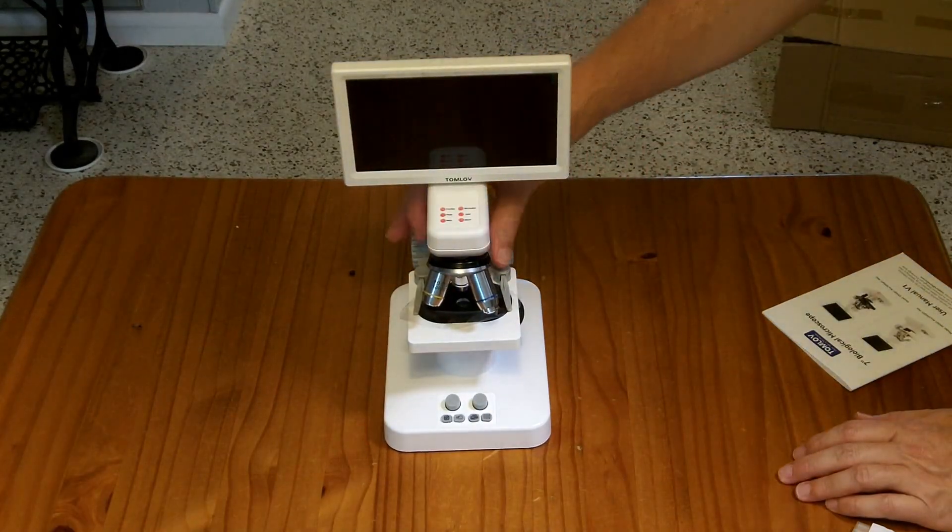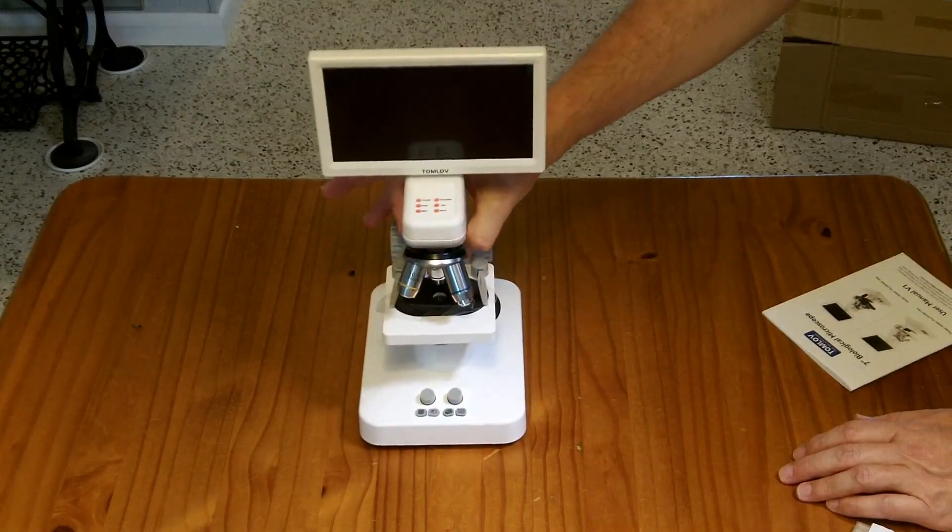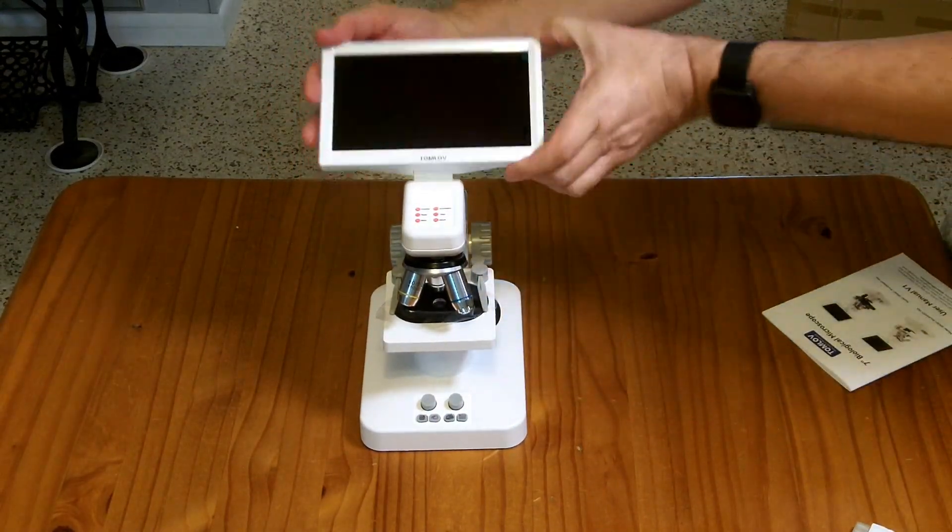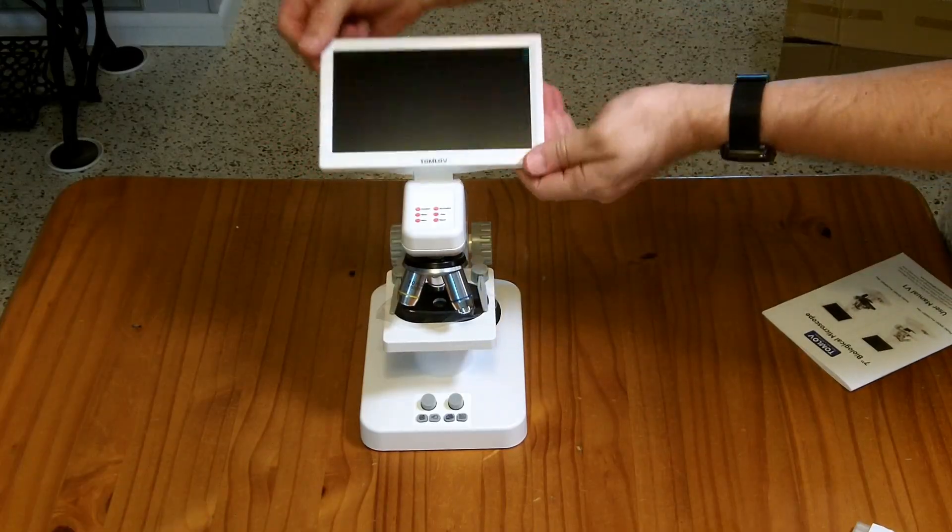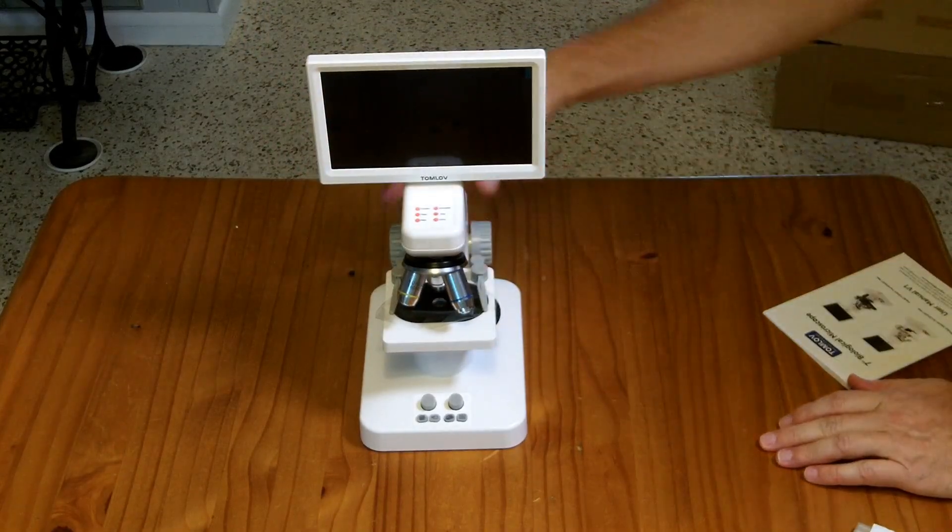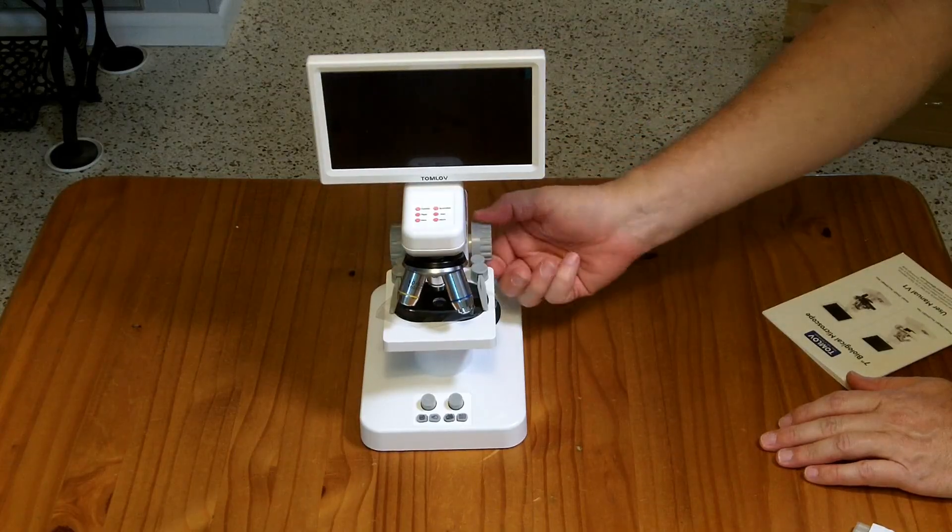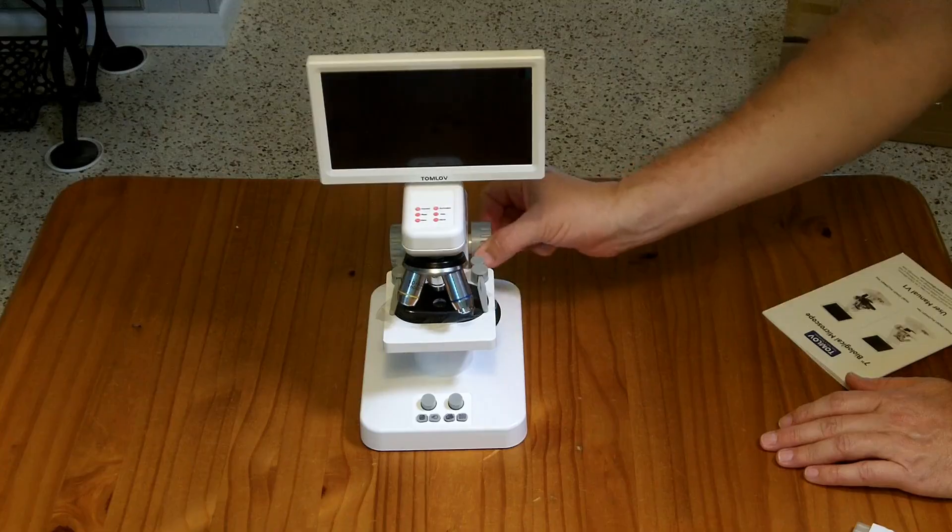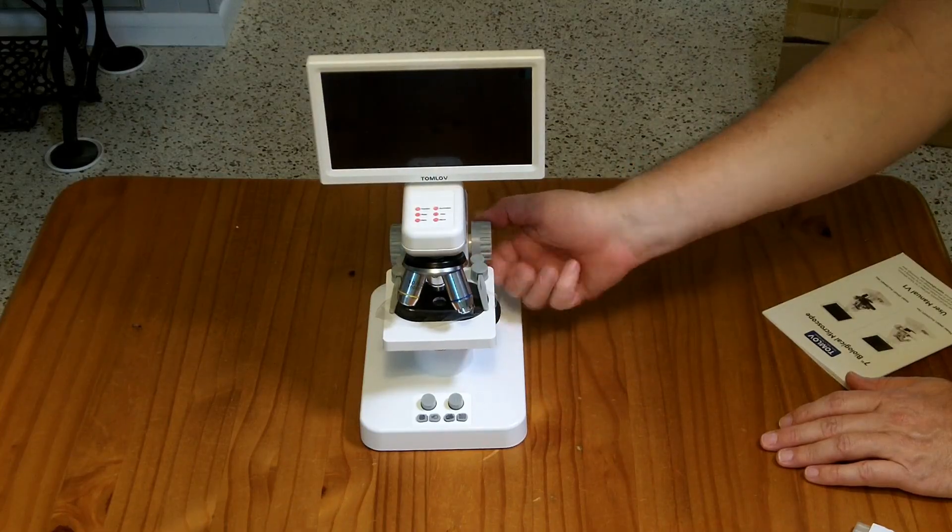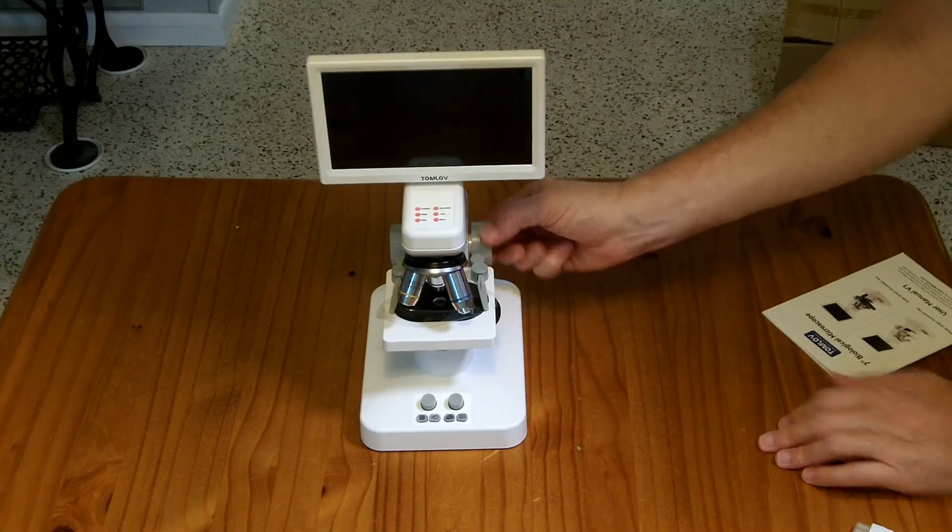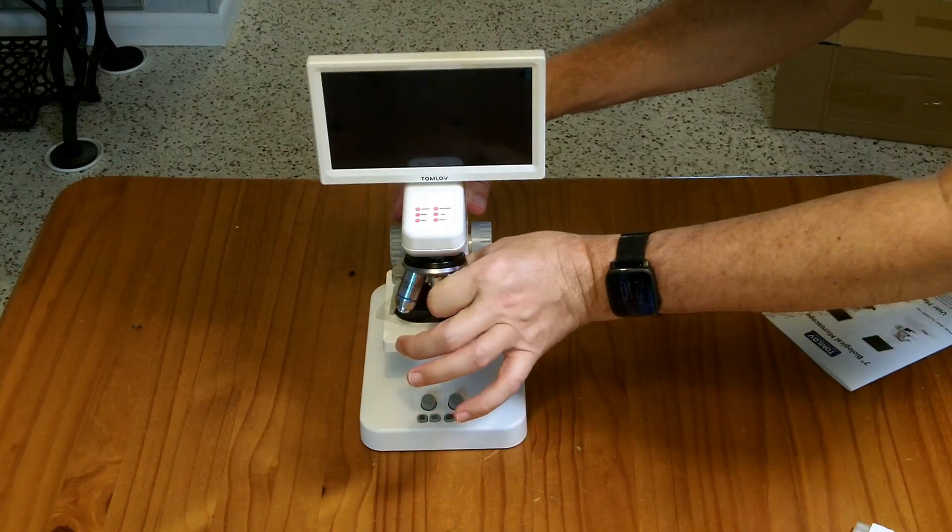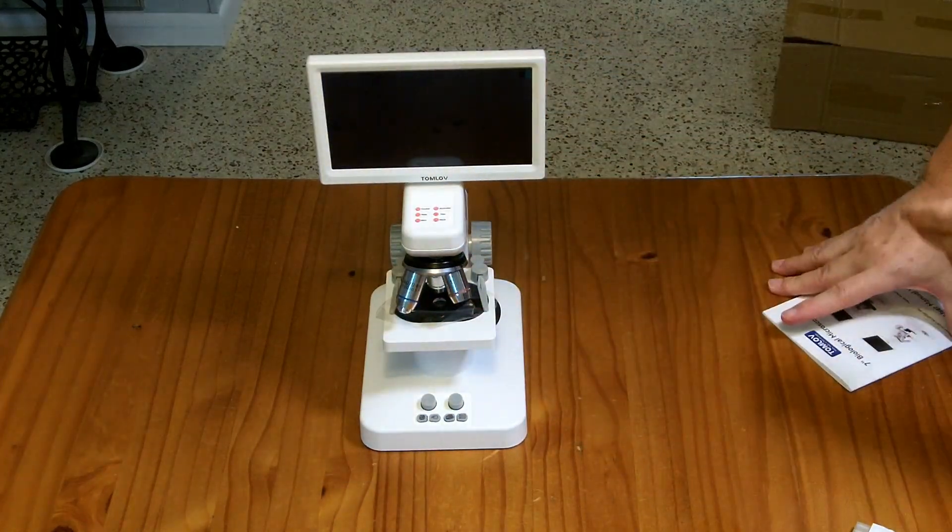As microscopes go, this guy is compact. It doesn't take up a lot of desk space. The screen is relatively large, but it folds back very good for storage. It looks pretty nice. It's a plastic body, it's a lot of plastic in the construction. But it looks pretty solid, the stage moves up and down very nicely. With the three different zoom levels here, I think it's going to work pretty well. So let's give it a try.